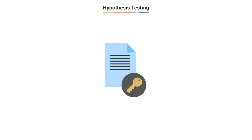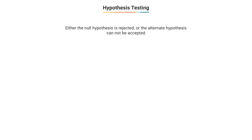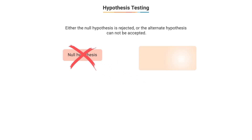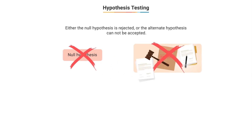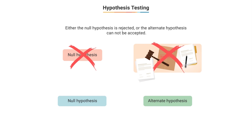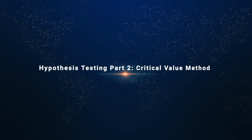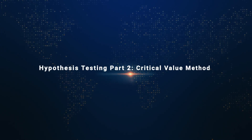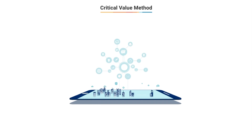There are only two possible conclusions from a hypothesis experiment: either we reject the null — in which case we accept the alternate — or we fail to reject the null on the grounds that we did not have sufficient evidence to reject it. Now that we have a good sense of how to frame our null and alternate hypothesis, in the next discussion we'll look at real-life examples to frame them.